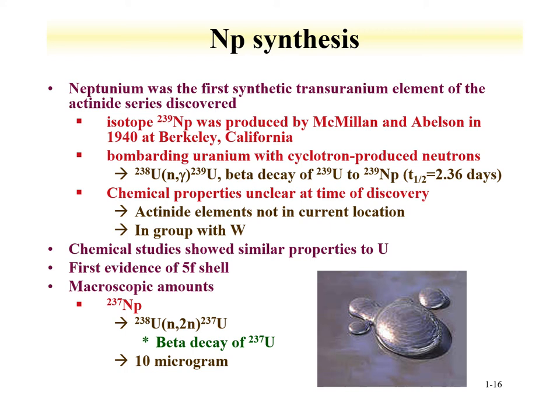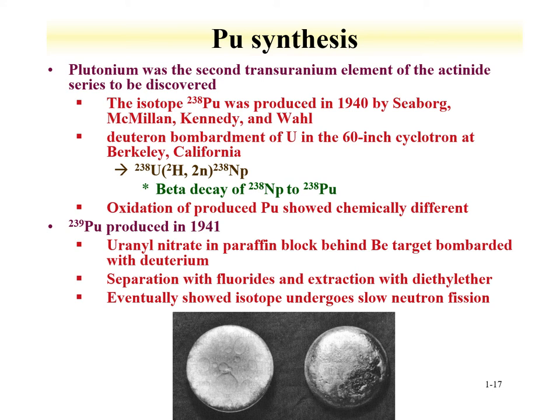They showed some similar properties to uranium, but not completely. Eventually, macroscopic amounts of neptunium-237 were produced with a fast neutron on uranium-238: a neutron would come in, knock out two neutrons, make uranium-237, which would beta decay to neptunium-237. They made 10 micrograms initially, and eventually much more — now one can get kilogram quantities of neptunium-237.